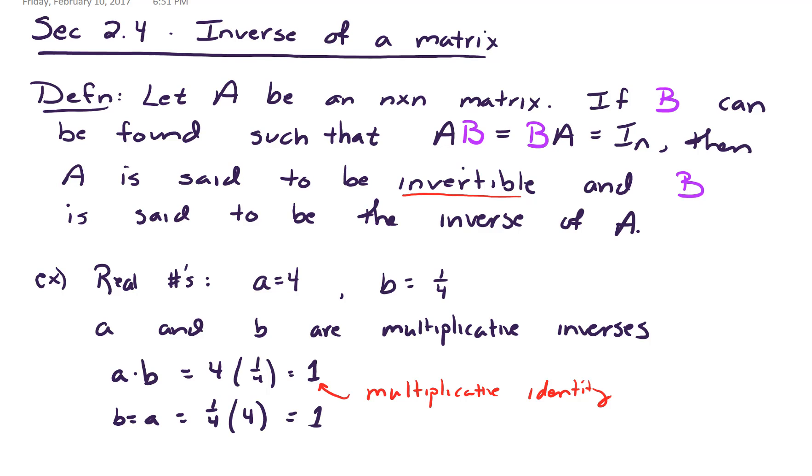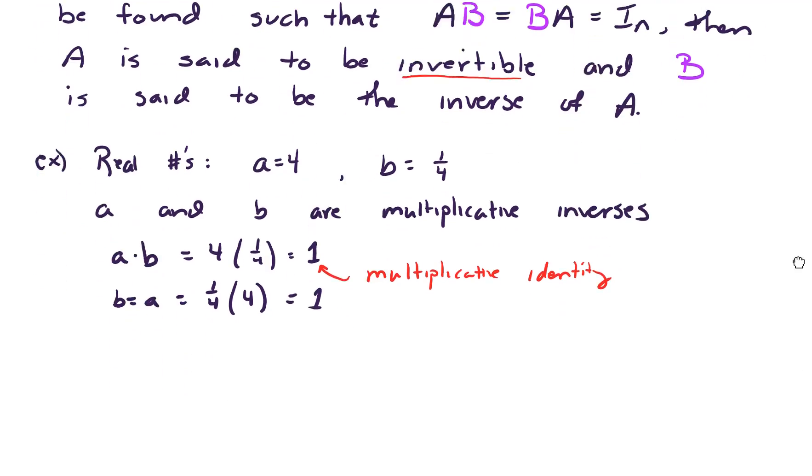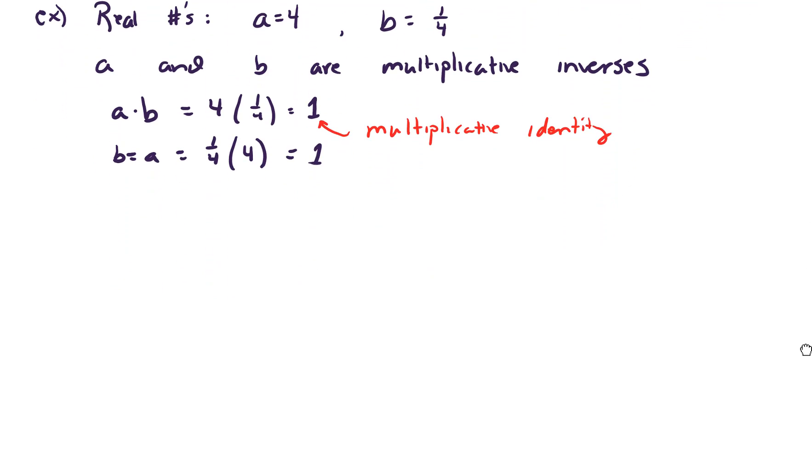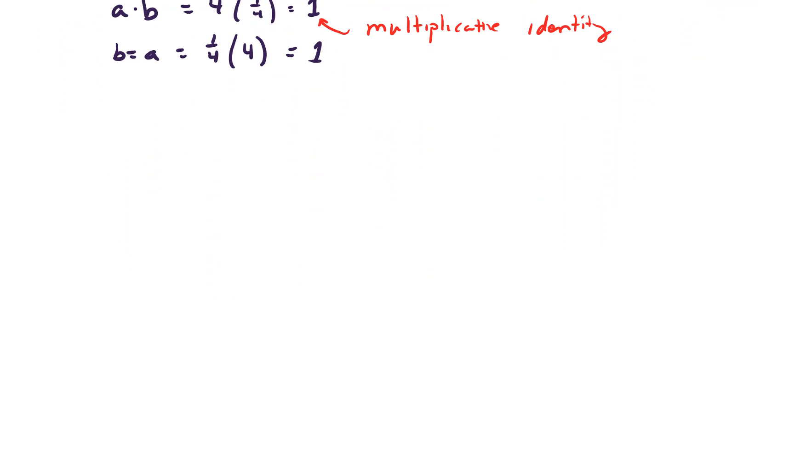Okay, so let's look at an example related to matrices. Let's take a look at two matrices. A, which is the matrix [1, 2; 3, 4].